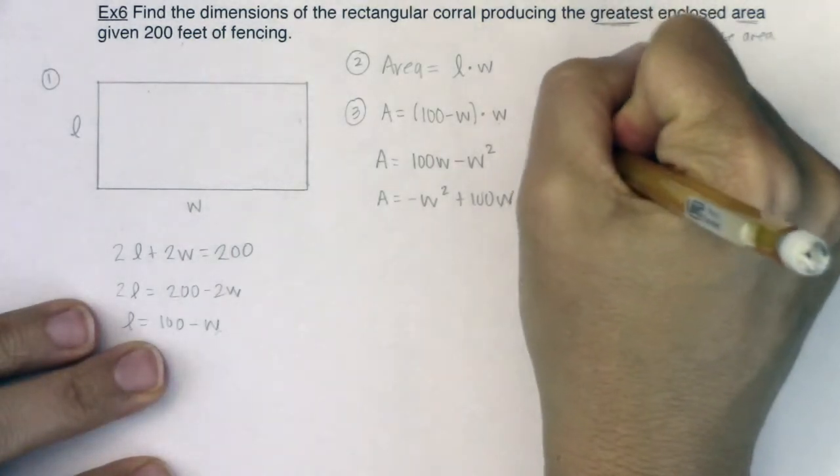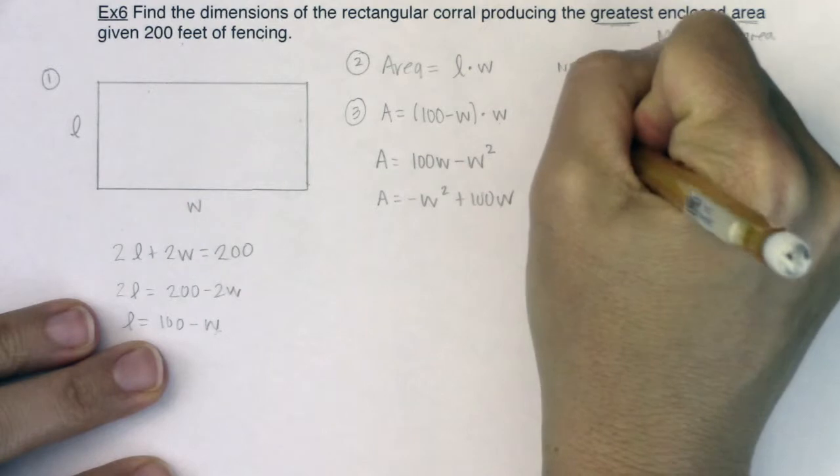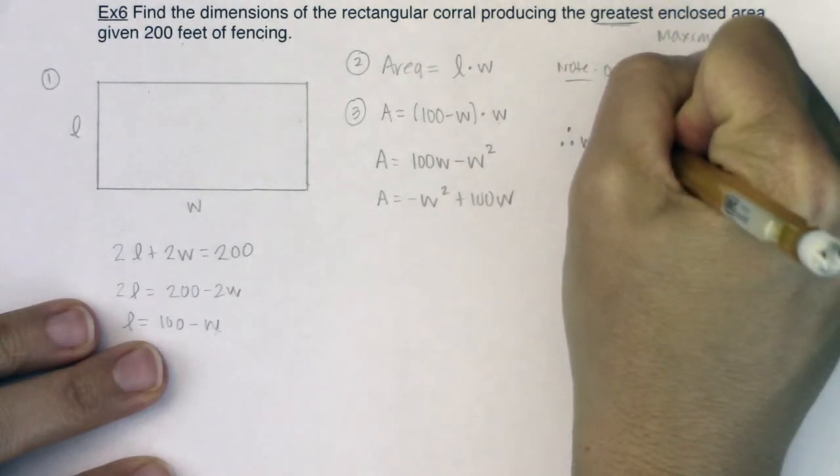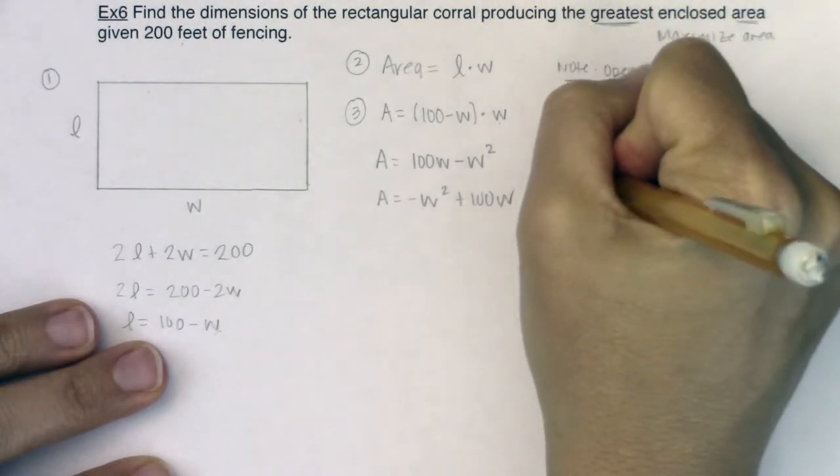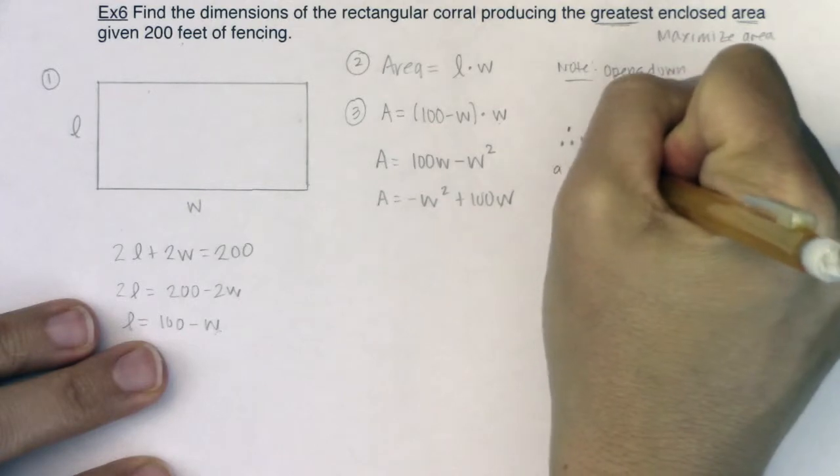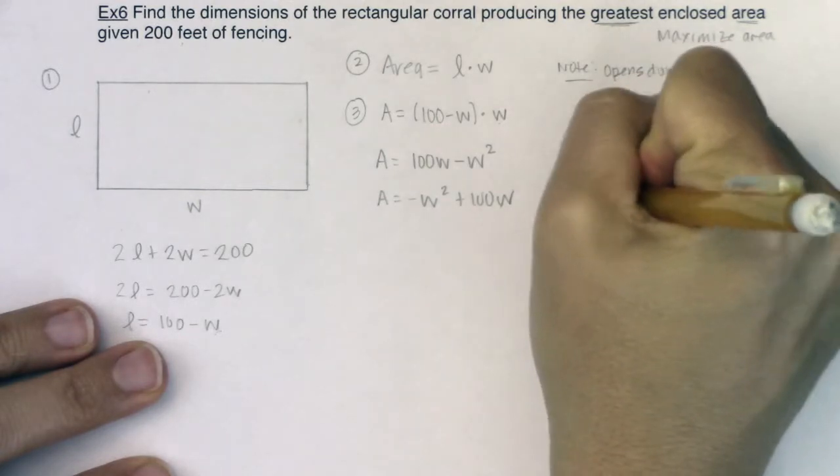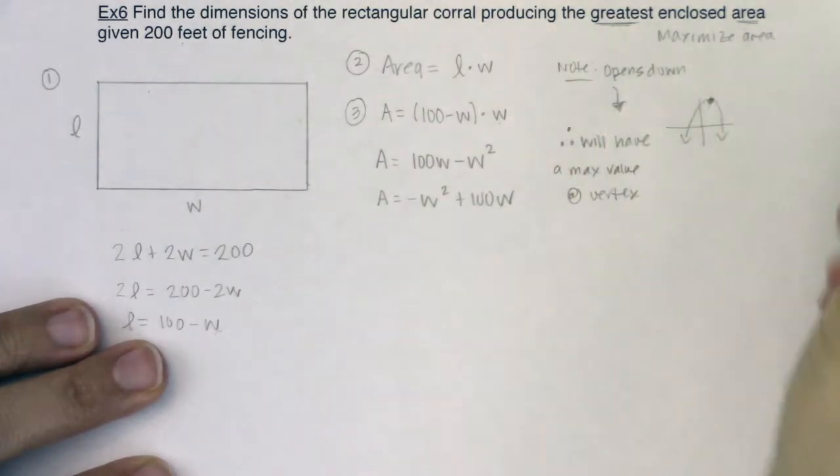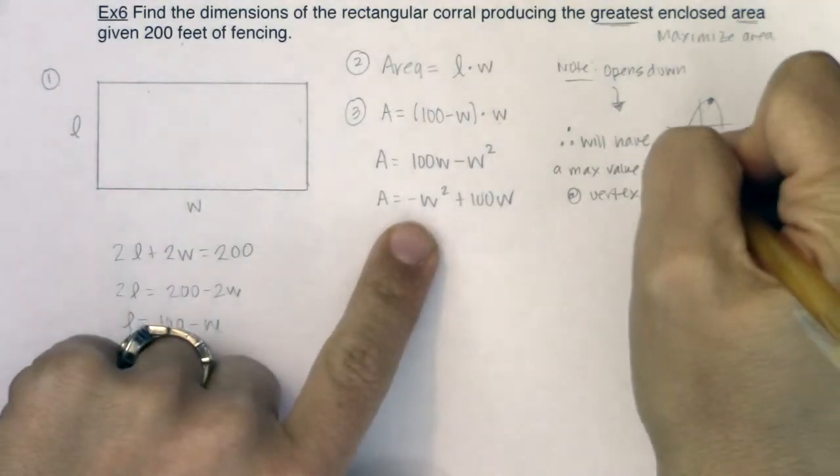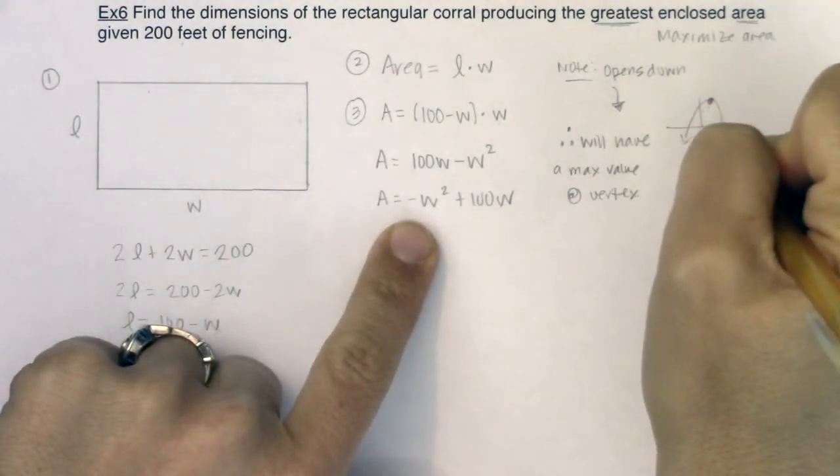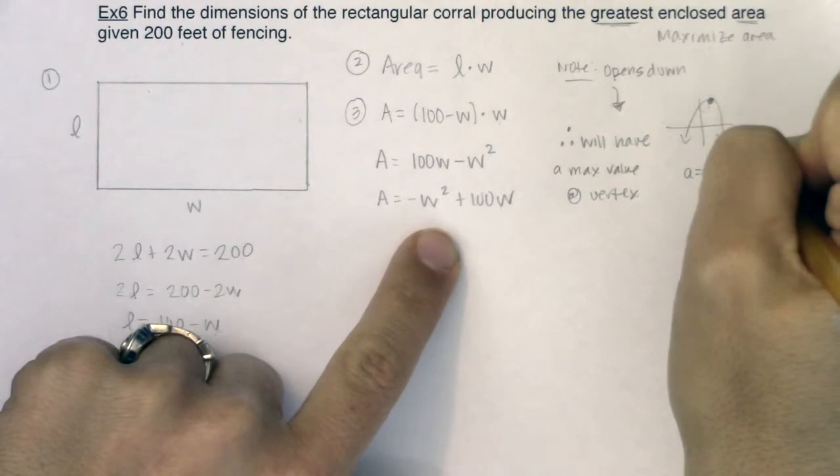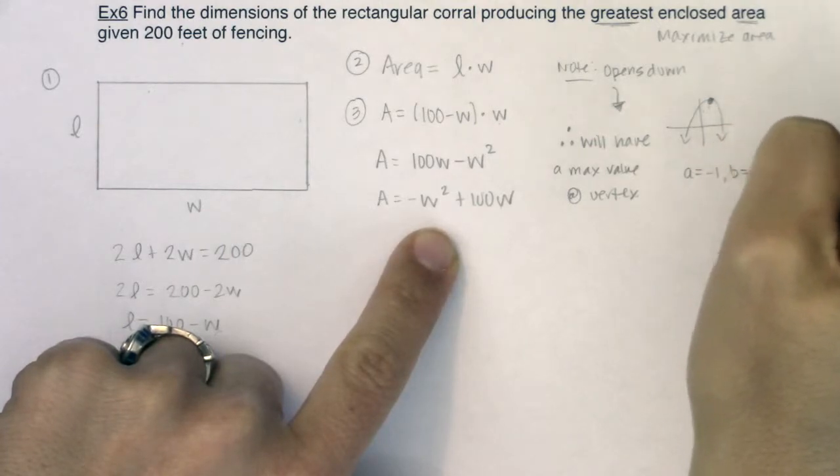So this parabola will have a maximum value at the vertex. We're just going to have to find the vertex. Let's see what we have here. We know A is equal to negative 1, B is equal to 100, and C is equal to 0.